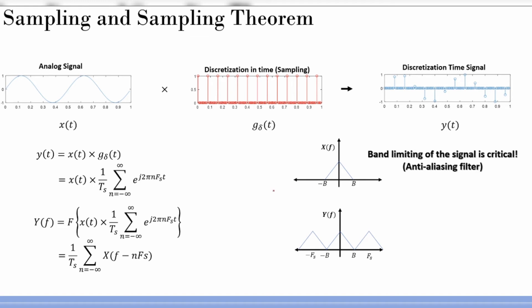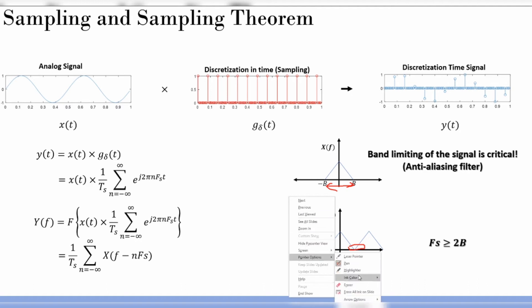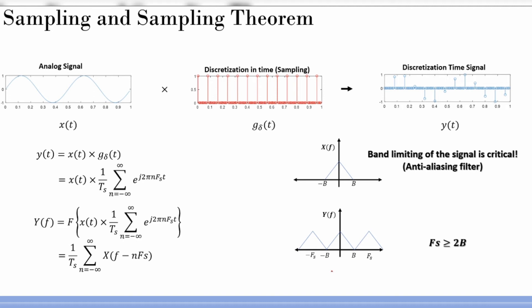This is the Nyquist-Shannon sampling theorem. The sampling frequency must be at least 2B. Those from signal processing already know this theorem. For those from computer science who want to dig deeper, please come back and discuss with me. This is the well-known Nyquist criterion or Nyquist-Shannon sampling theorem.